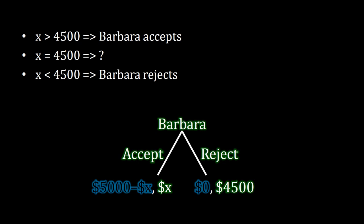When X is exactly equal to $4,500, something interesting happens — Barbara is actually indifferent. She gets the same amount from accepting as she does from rejecting. Going back to our assumption that players only maximize their own economic welfare, Barbara can rationally choose either one. In this lecture, we'll look at what happens when Barbara rejects when she's indifferent — when she gets an offer of exactly $4,500. In the next lecture, we'll look at the case where she does not reject in that situation.